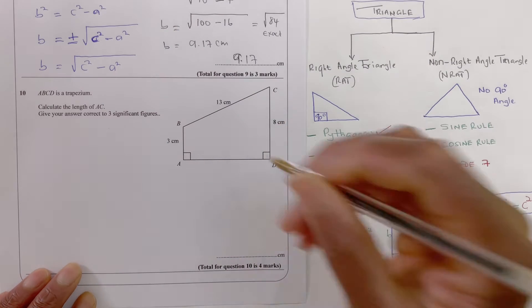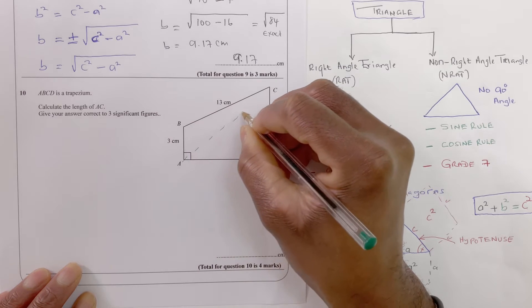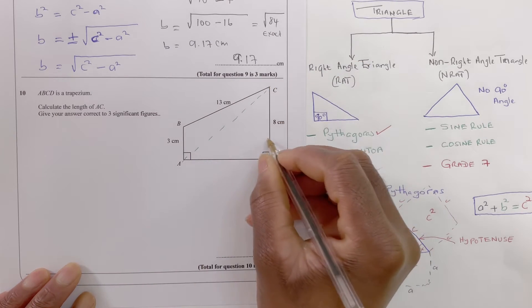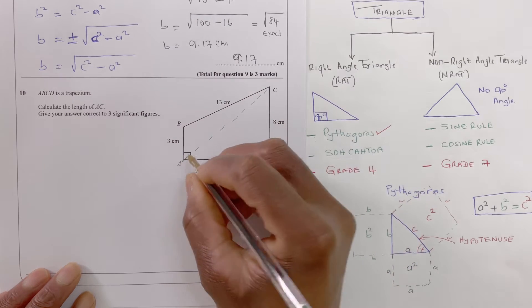So why don't we just draw that straight line to meet that point where we need to calculate. So that's length AC we need to calculate. It's a right angle triangle you can see. I know I need to calculate that length AC.